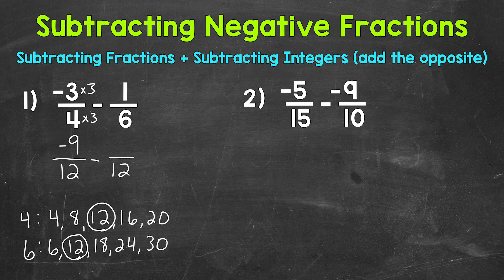Now we need to rename one sixth. How do we get six to equal 12? Multiply it by two. Whatever we do to the bottom, we need to do to the top to keep it equivalent. One times two is two. So now we have our common denominator of 12 and our fractions renamed with that common denominator of 12.